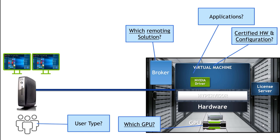Now choose your virtual GPU license. There are two components: the physical GPU and the software stack, which includes the driver, GPU manager, and a license server. When a virtual desktop powers on, it consumes a license from the license server; when powered off, the license is returned. Licensing is tied to when the VM is running, not to user logins.